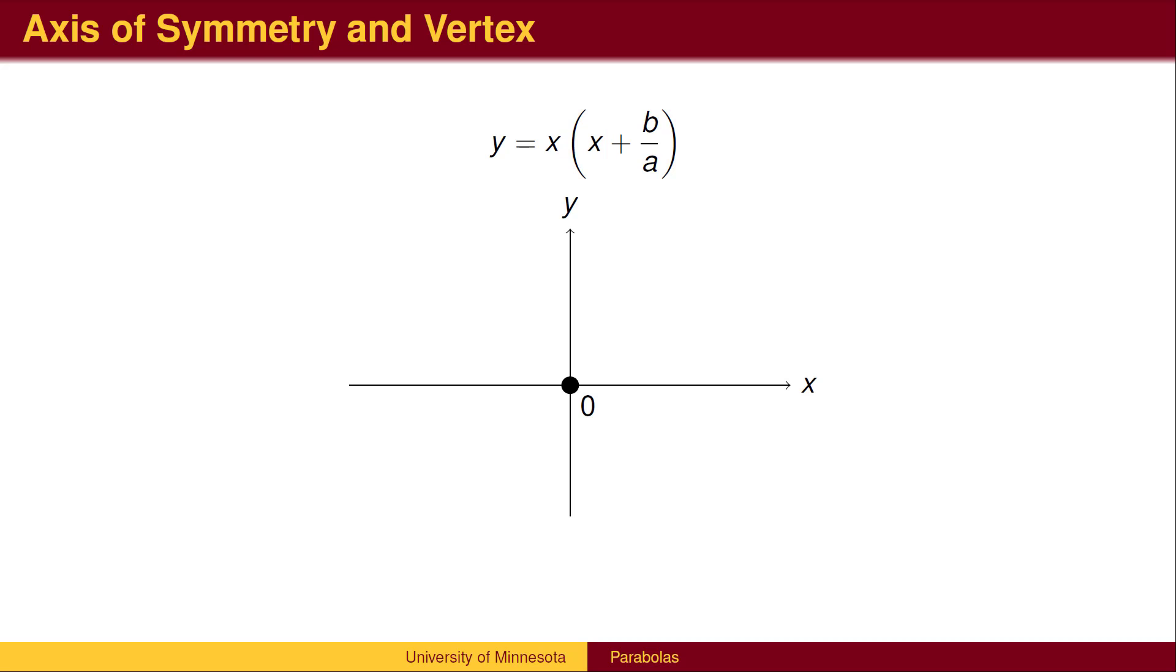Since the parabola is symmetric left and right, the axis of symmetry must be halfway between these two points. That is, the axis of symmetry must be at x equals negative b over 2a.